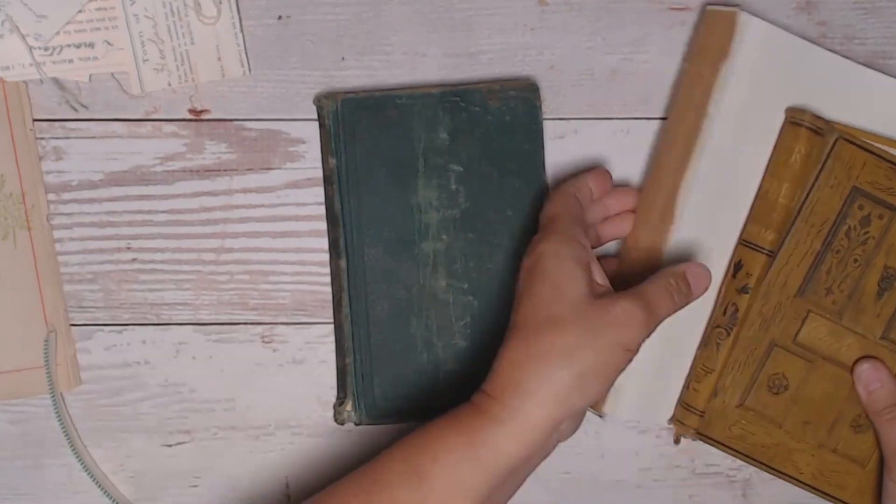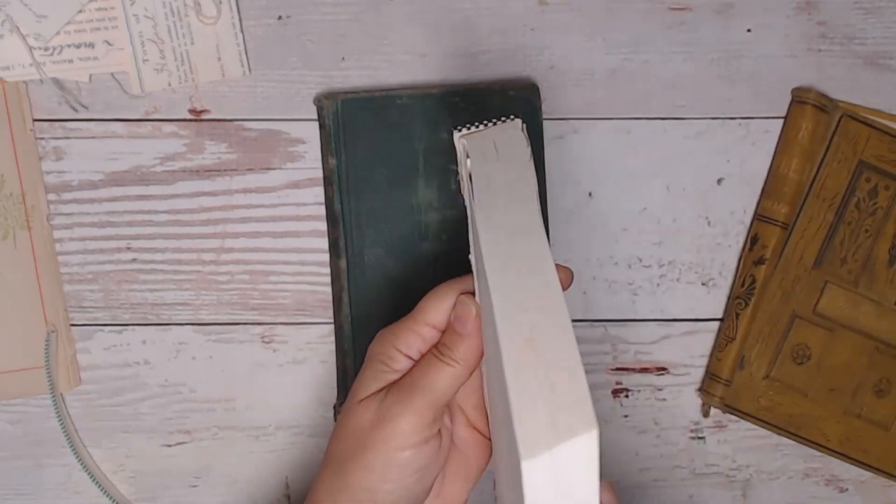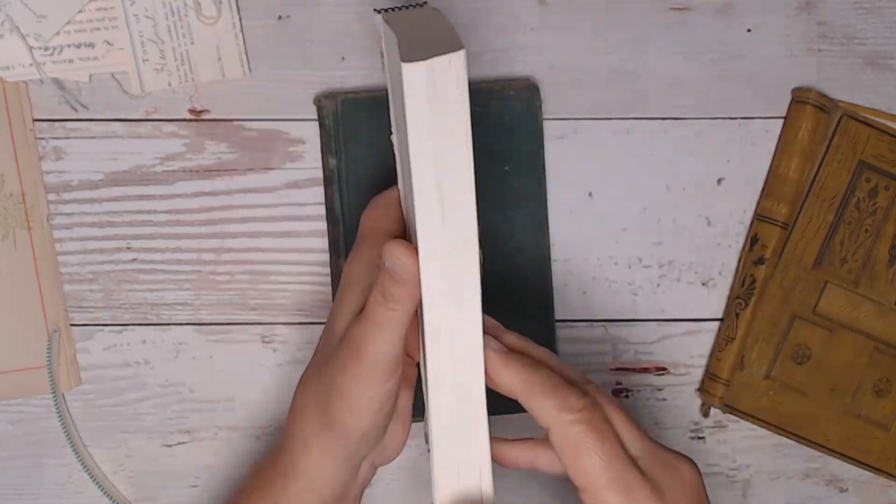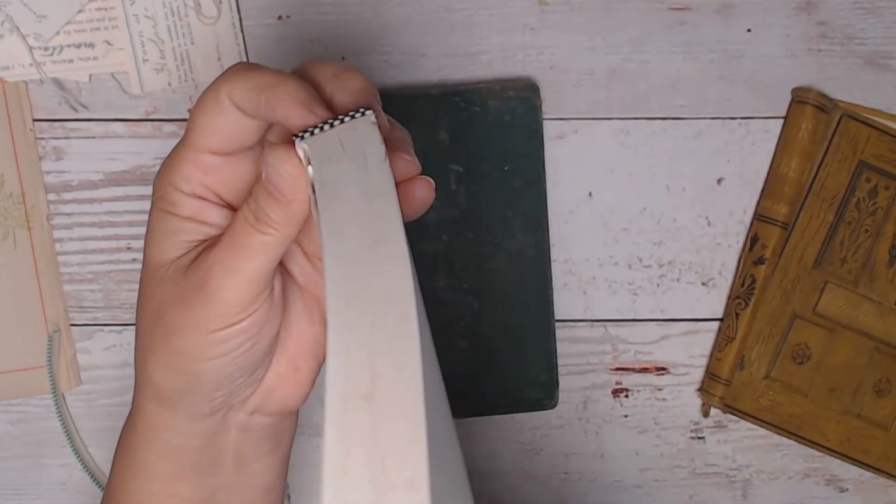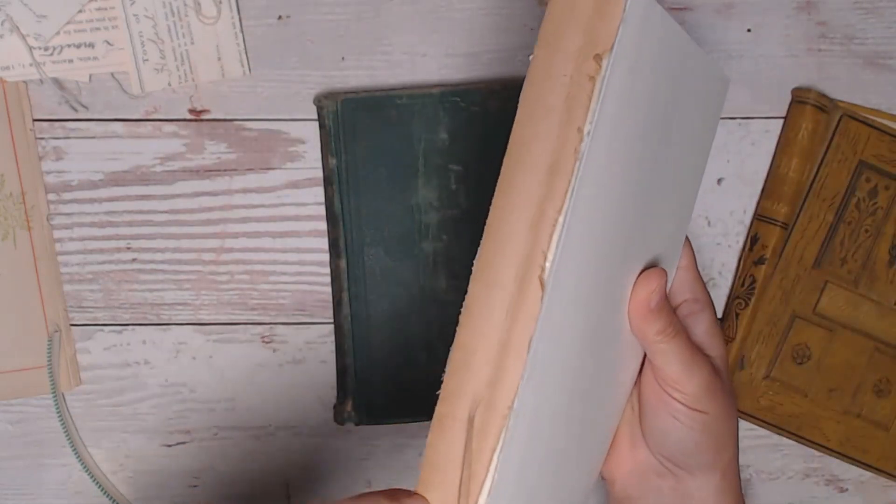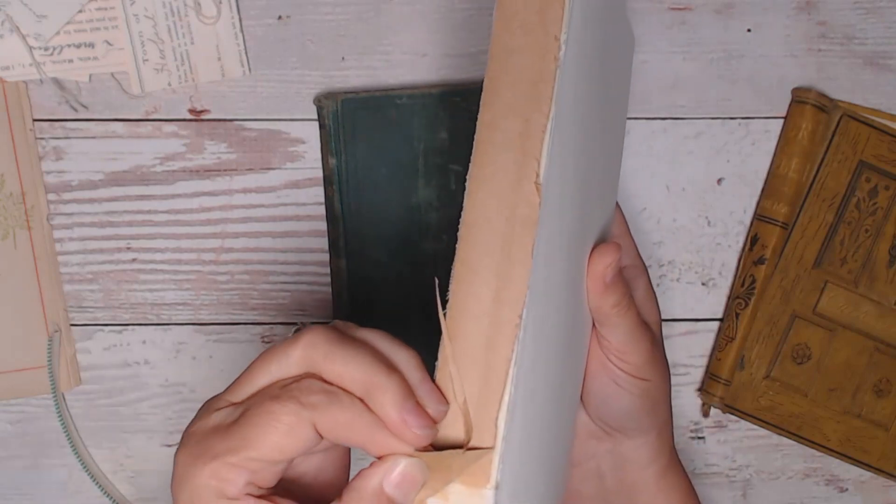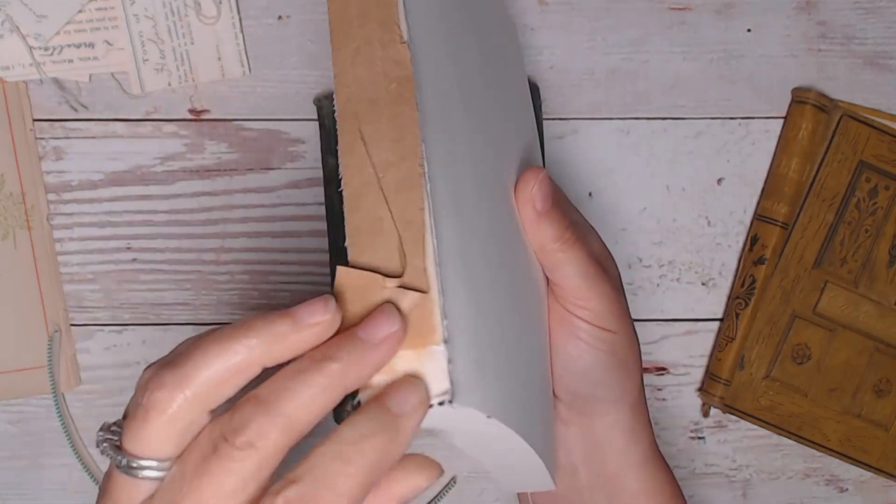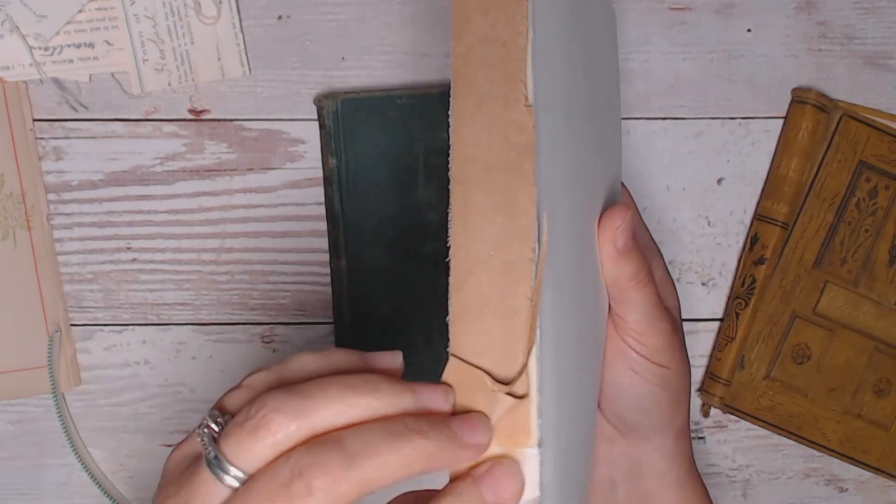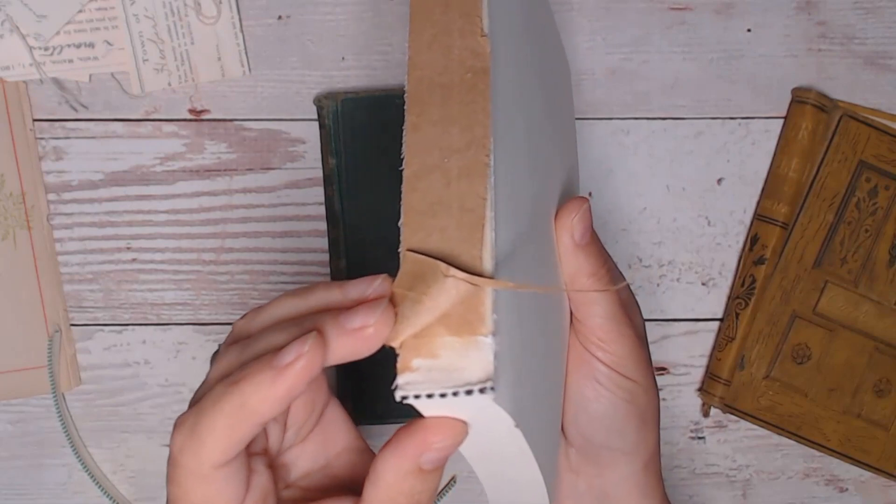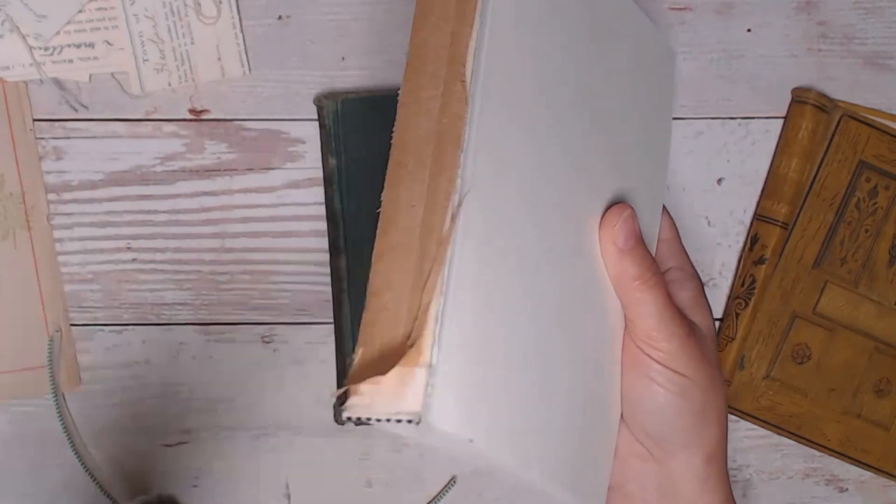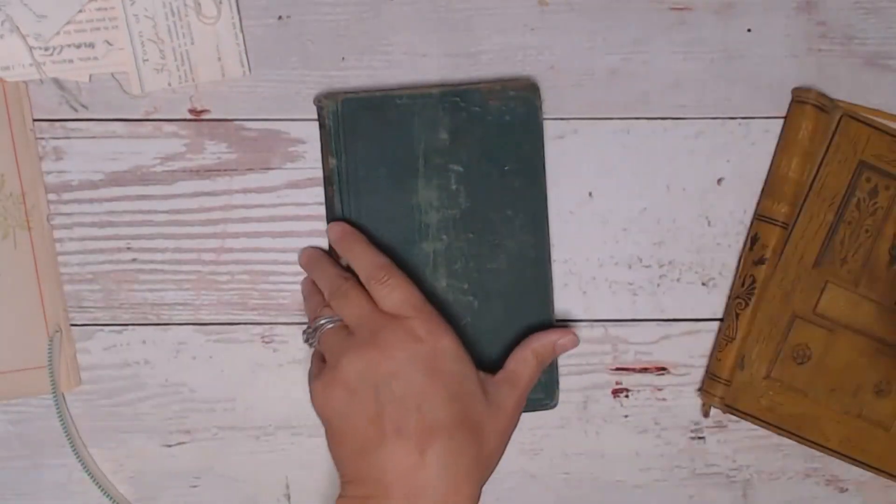So I took a book apart just to show you what a headband looks like. This is a book that I just got from the thrift store and there's a headband at the top there and there's a tail band and you can see, if I pull this off, there's the band right there and so it's glued directly onto the text block. It wasn't always done that way but that's how it's done in more modern books and that's the really easiest way for us to do it in our journals that we're making.